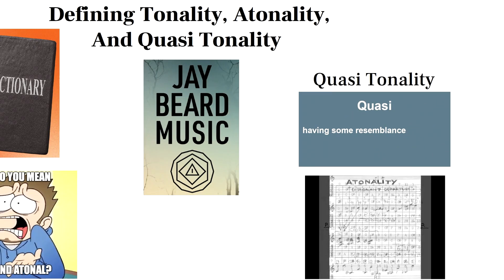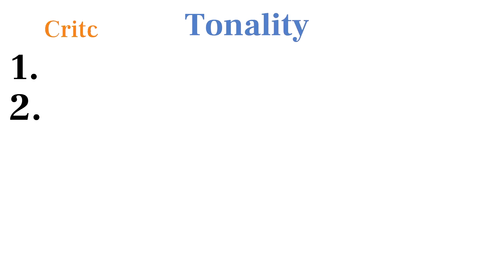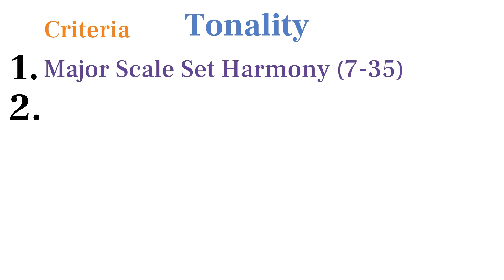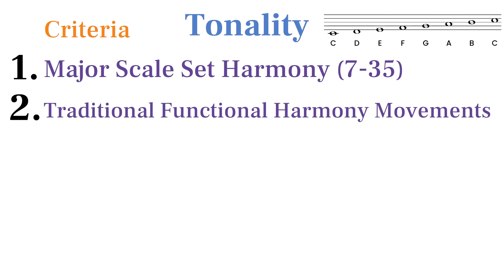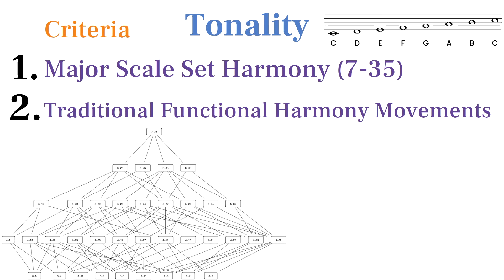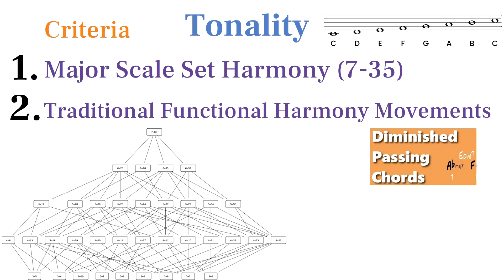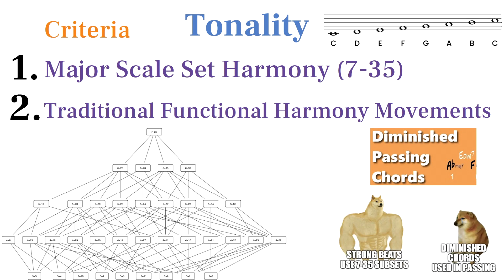Let's begin with the fundamental aspects of tonality. There are two main criteria I use to define tonality. The first: is the music primarily composed of major scale set harmony? This means tonal music is based on the major scale, or that every set used in any given moment is a subset of the major scale set. There have always been exceptions, like the diminished chord being used as a passing chord, but other chords are generally derived from the major scale set in tonal music.